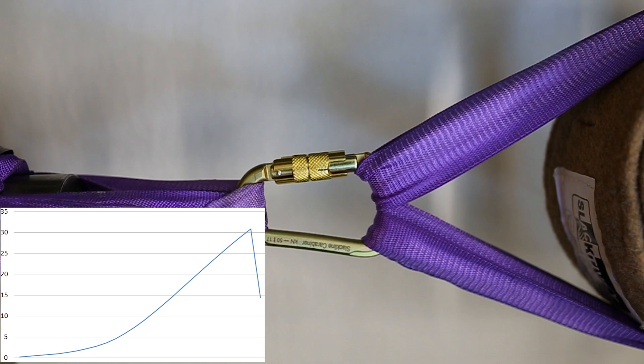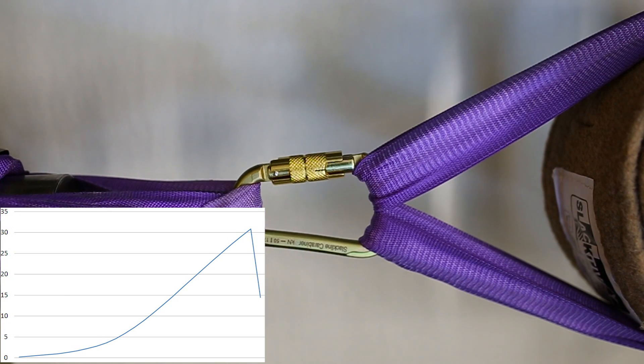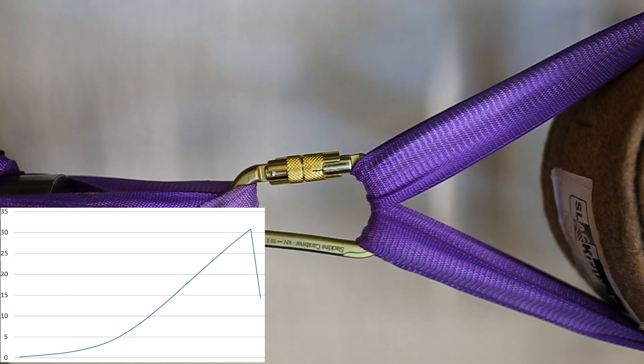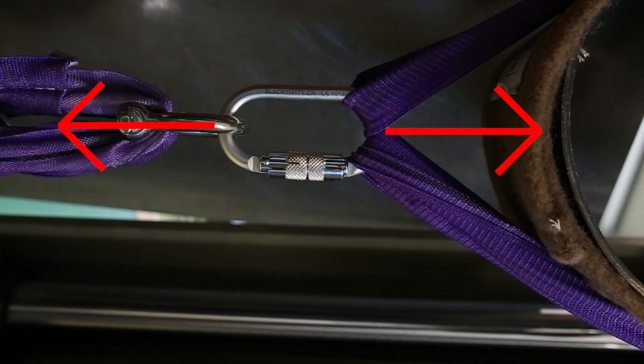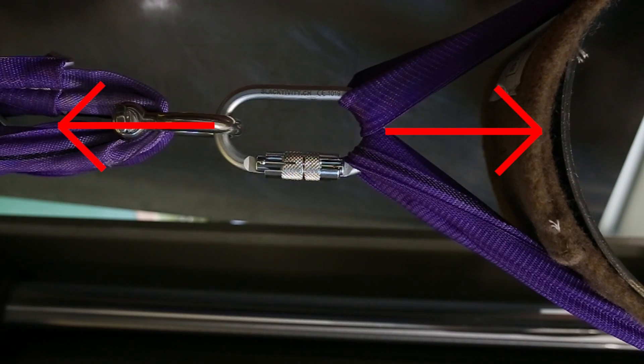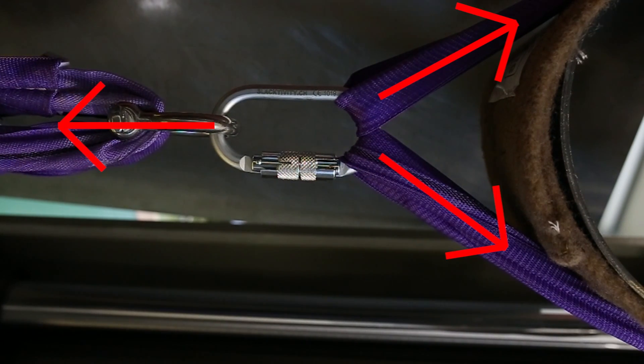We conducted breaking load tests on carabiners to compare two different forms and how they break under treeload, which often occurs under slackline conditions. Treeloading means that the force doesn't only act in a straight way, but attacks from three sides.